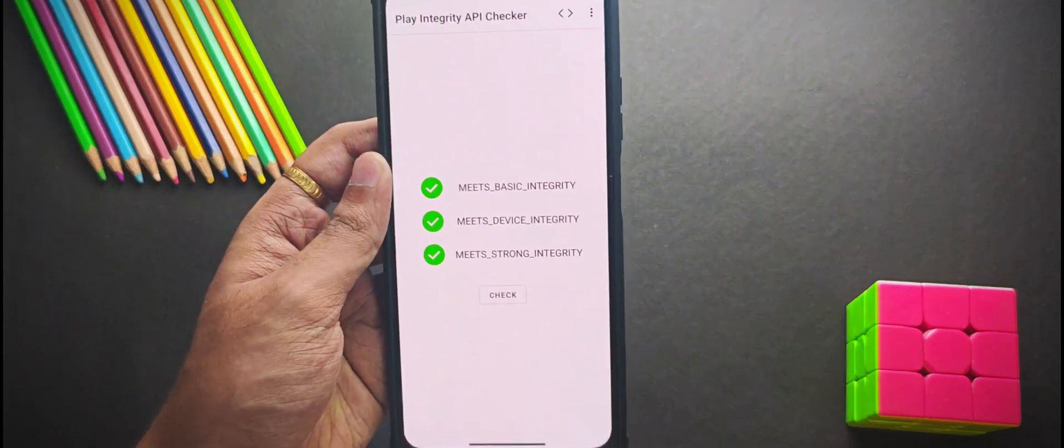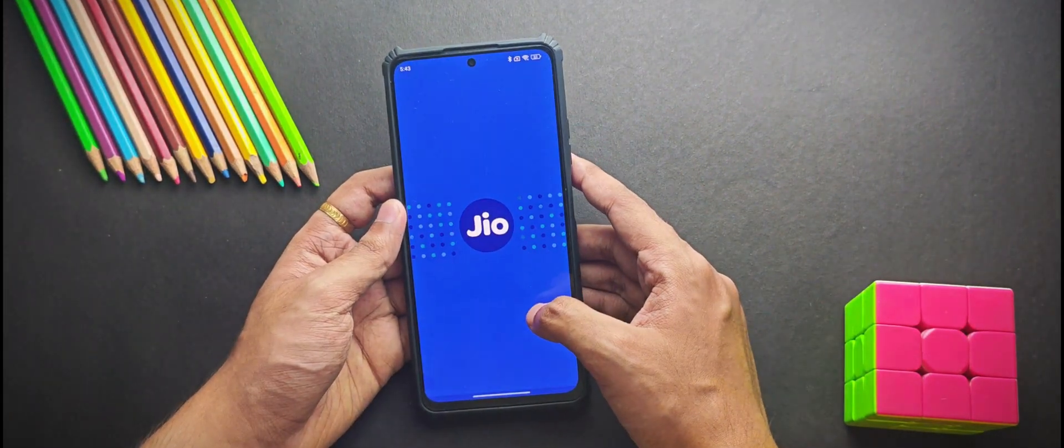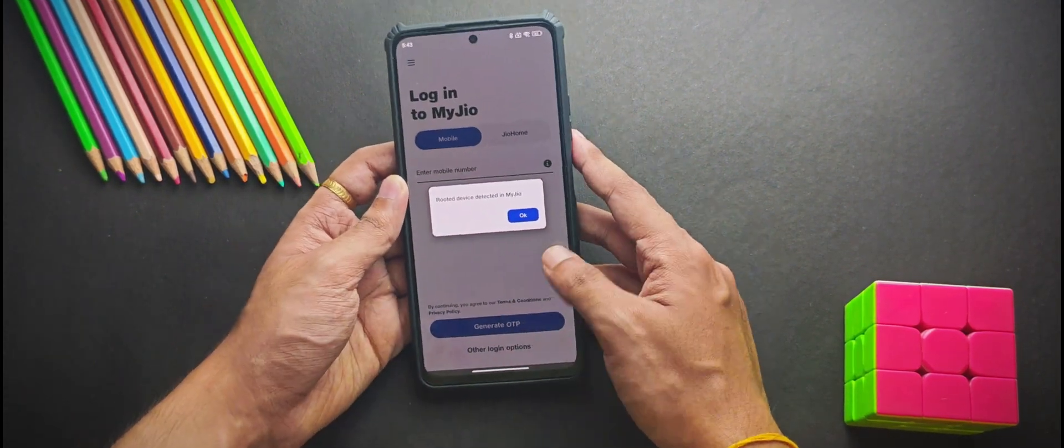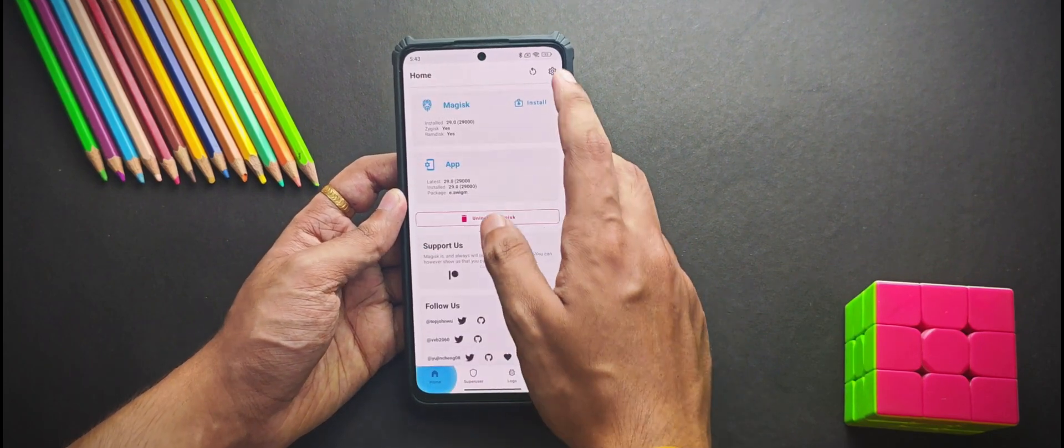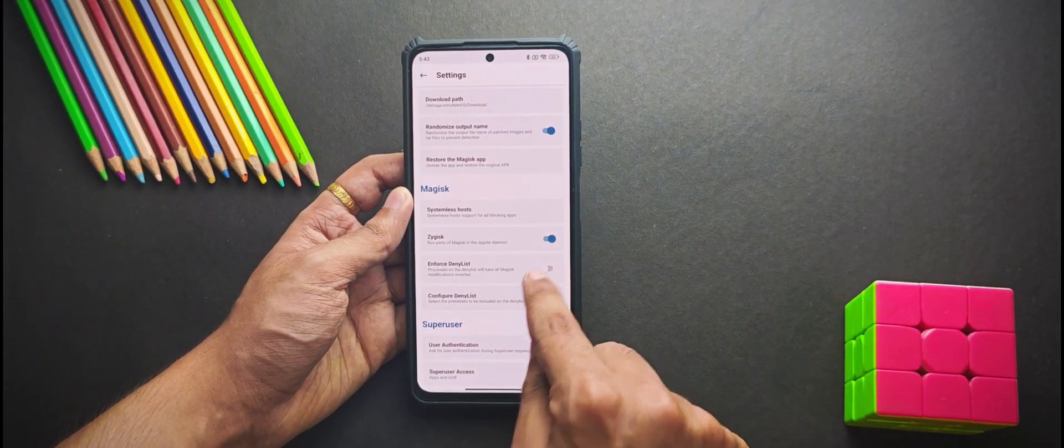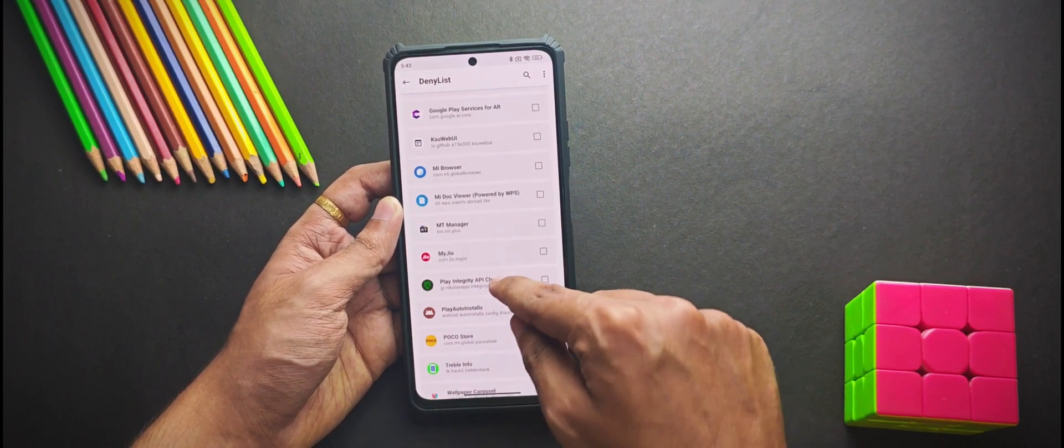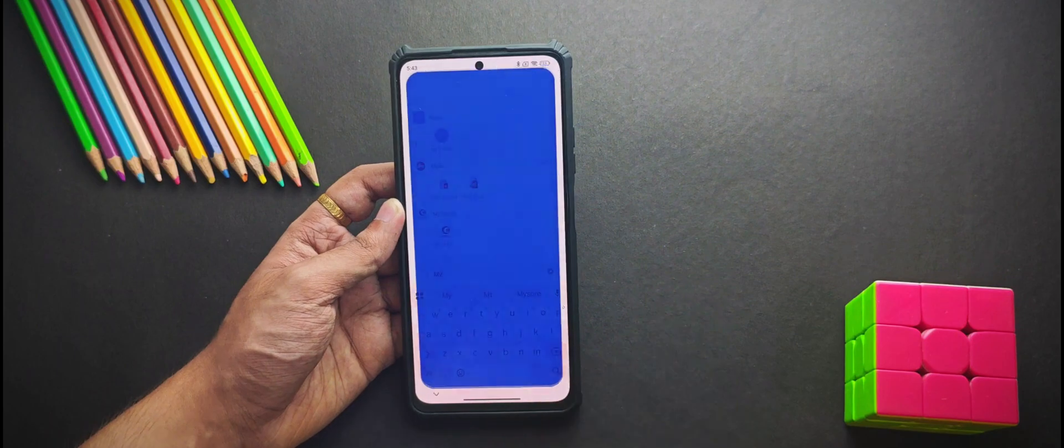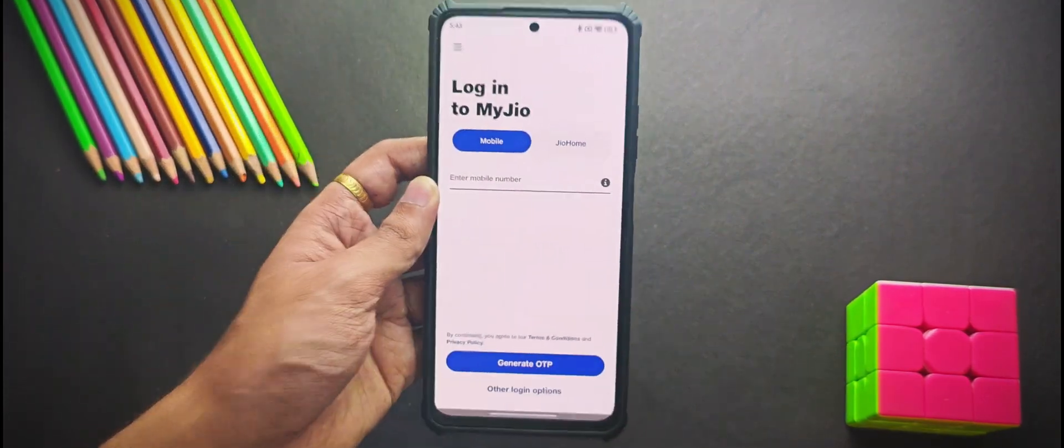So yes it has passed strong integrity check without any problem. Now if you are wondering about the banking app, when I open this MyGeo app it detects the root. So you don't need to worry about it, just open Magisk, enable enforce deny list, and select the banking apps from here. And once you reopen the app again it seems to work perfectly fine.